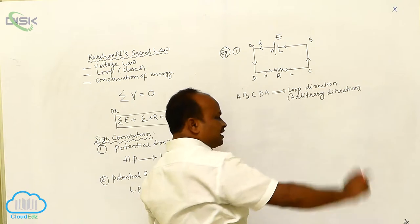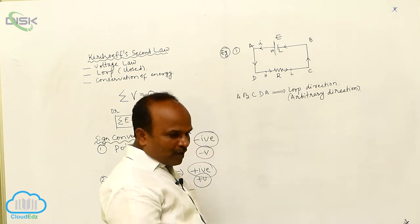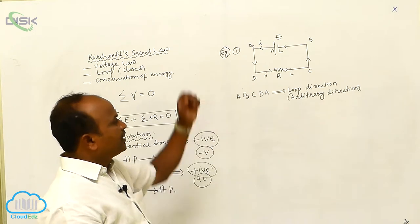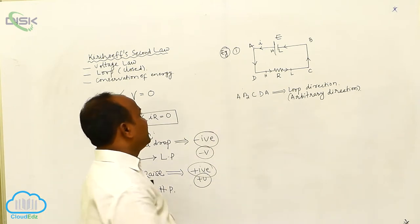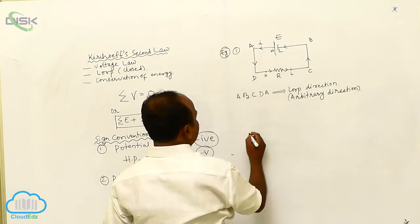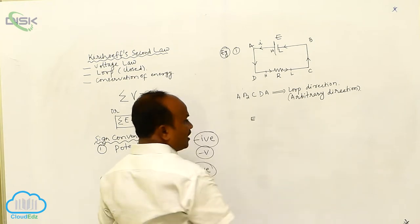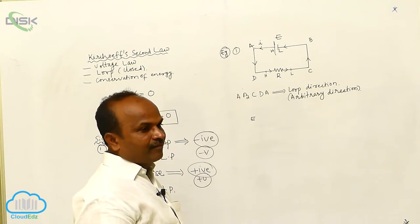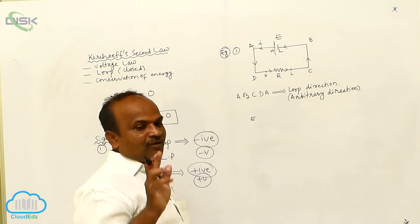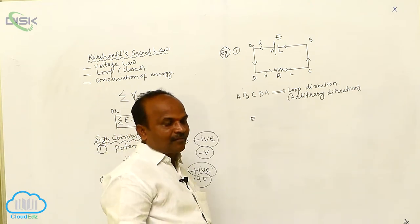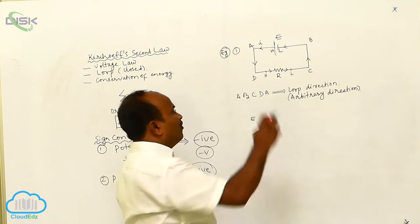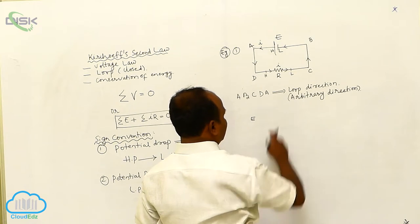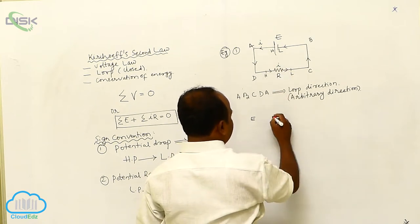This arbitrary direction is very important — you want to travel along the arbitrary direction. In the circuit, there is only one cell E and only one resistor, meaning only one branch. The current is I and the potential drop is I times R.